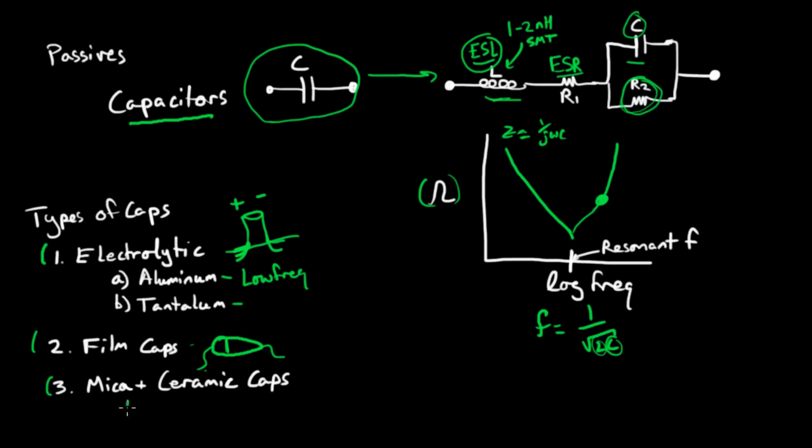Finally, we have the workhorse capacitors, which are the mica and ceramic capacitors. And these are the ones for surface mount components that you're probably going to be using the most. They have low ESL and they have low ESR, and so they're good up to about 500 megahertz for most applications. And that's pretty good.